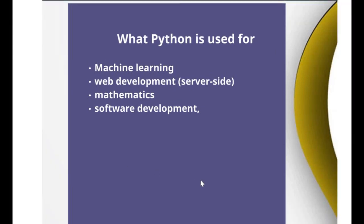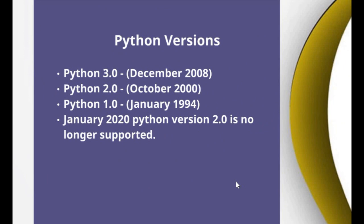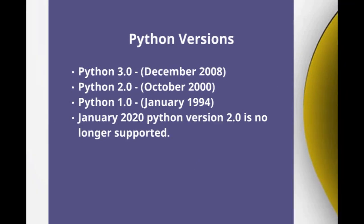Now let's look at the different versions of Python. The first version came at the beginning of 1994 — version 1.0. The second version came about in October 2000, and the third, or latest, came in December 2008. You should always use the latest version. Version 2.0 is no longer supported as of the beginning of this year. The difference between versions 2 and 3 was huge — unlike most programming languages, Python 3 was not backward compatible with Python 2.